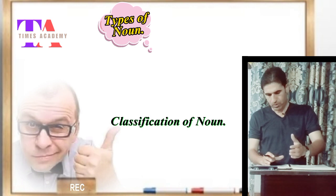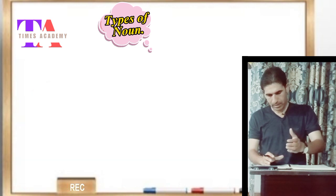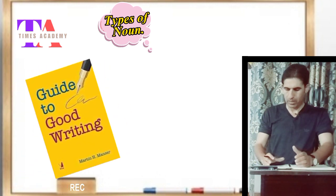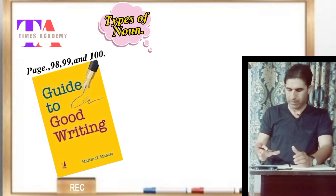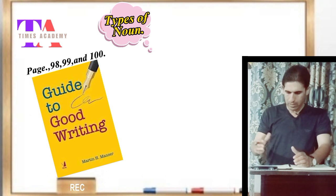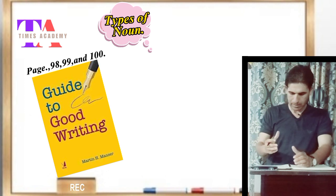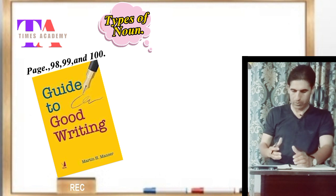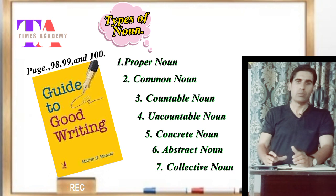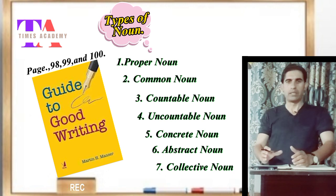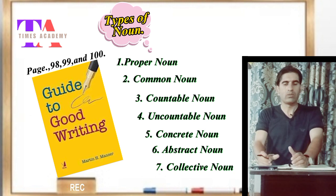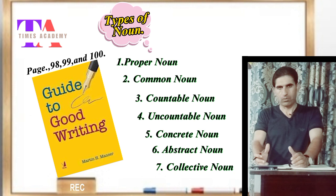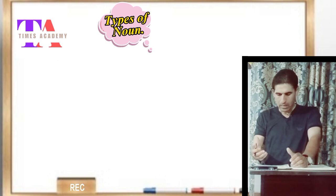The first book that classifies nouns into seven important categories is Guide to Good Writing written by Martin H. Mancer, at pages 98, 99, and 100. In this book, the noun has been classified into seven important categories: number one, proper noun; number two, common noun; number three, countable noun; number four, uncountable noun; number five, concrete noun; number six, abstract noun; and number seven, collective noun.